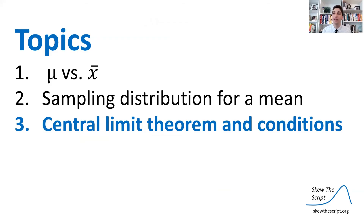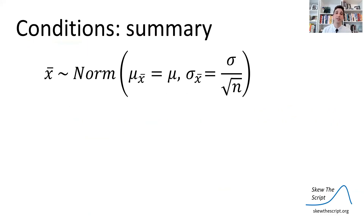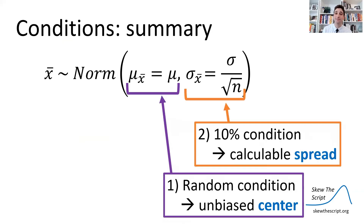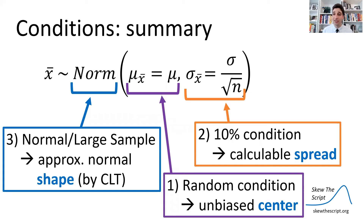This analysis helped us determine whether the VA's claimed mean wait time of three days was credible — and we found we are doubting it given the sample mean we got. In order to do this analysis, we need to check some conditions. The random condition proves you have an unbiased center. The 10% condition shows you'll have a calculable spread. And the normal/large sample condition shows you can use a normal shape to model the sampling distribution.